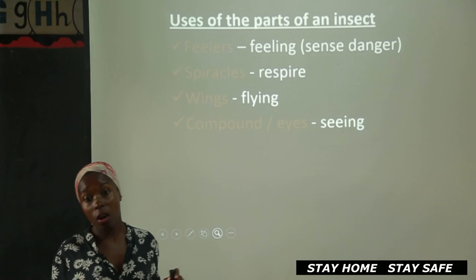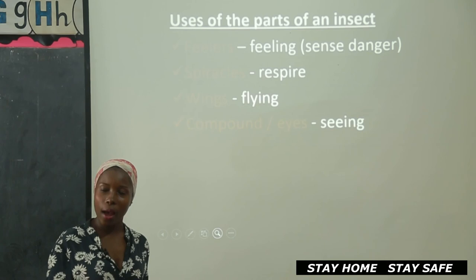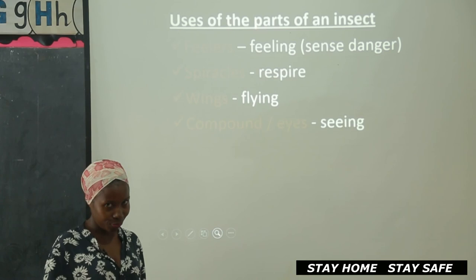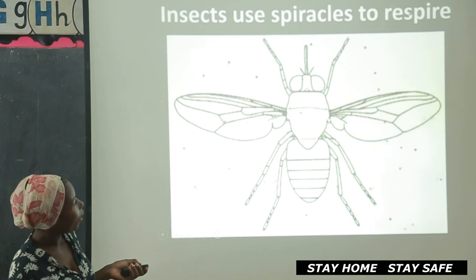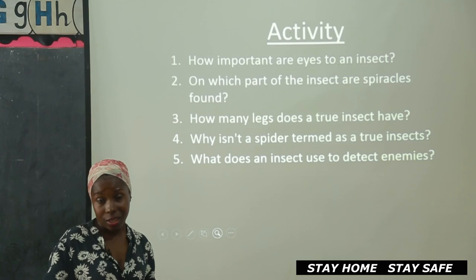How about the legs? What are they used for? Sometimes they ask you: where on an insect are legs attached? I hope you can answer that now. Insects use spiracles to respire. That is the simple activity I want you to do. I believe you can do it — it's not that difficult. It's just all about parts of an insect. You read, understand, and work out. As simple as that.